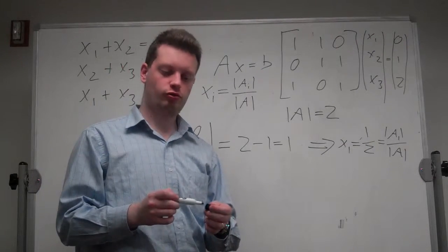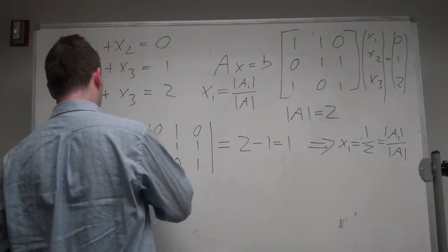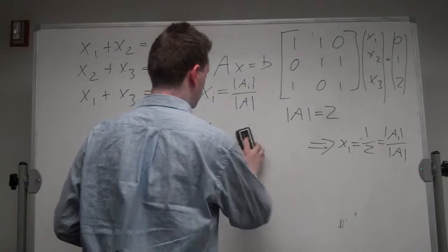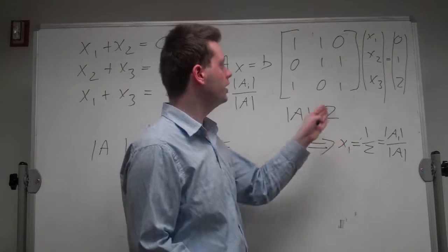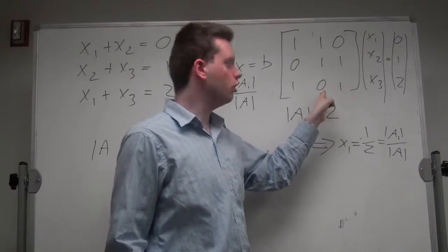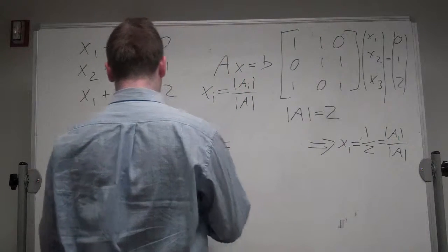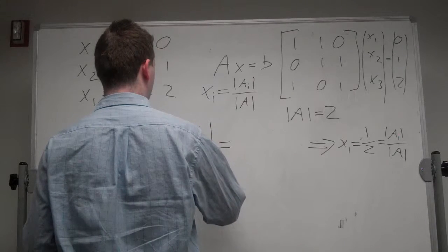Okay, let's repeat that with x2. So for x2, we need to replace the second column of the A matrix with this vector. So we have 1, 0, 1; 0, 1, 2; 0, 1, 1.